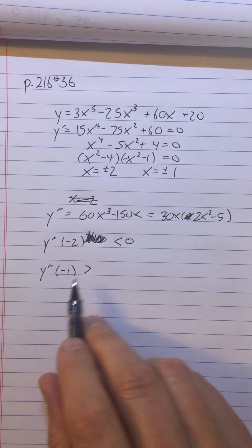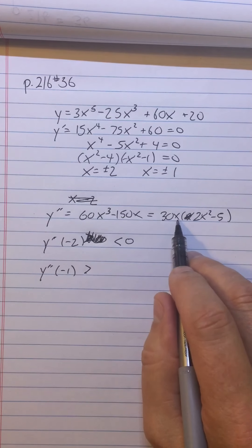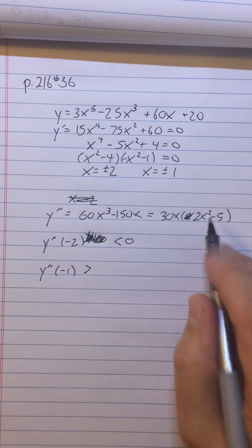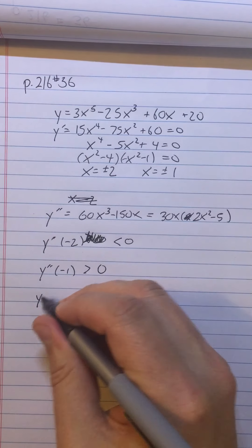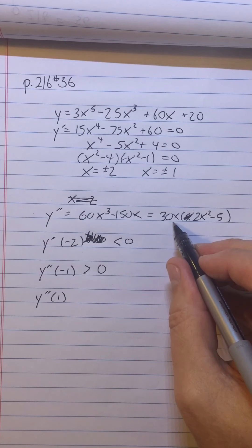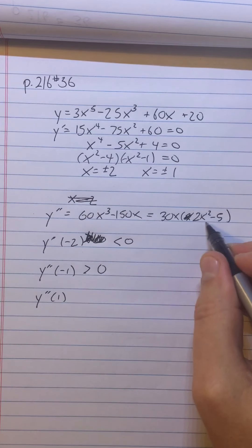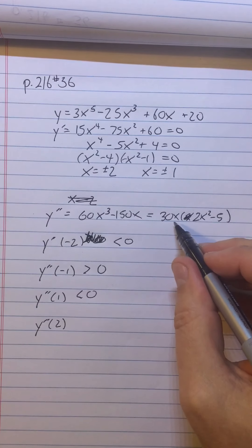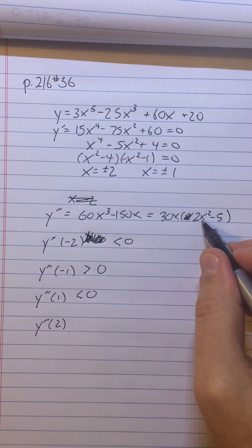Y'' of -1, I have a negative times a negative, which is going to be positive. Y'' of positive 1, I'm going to have positive times, this is going to be 2 - 5, so it's going to be negative. So positive times a negative is going to be a negative. And then my y'' of 2 is going to be positive. And then this is going to be 8 - 5, so it's going to be positive. So I'm gonna have a positive.